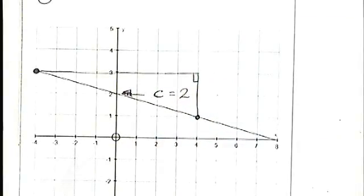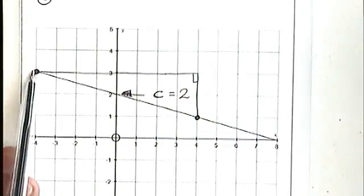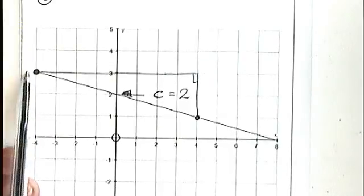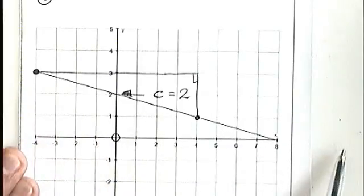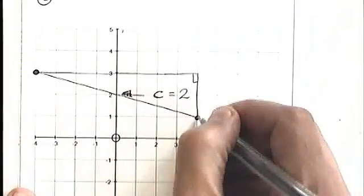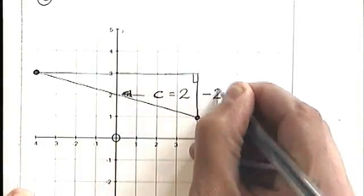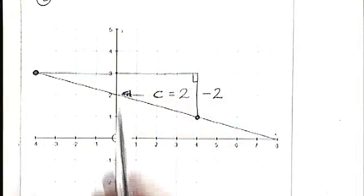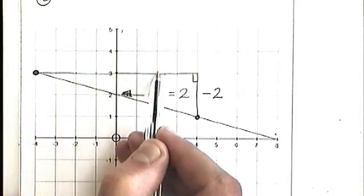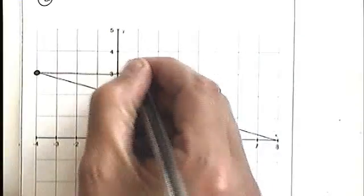Notice how this is going to be a negative gradient. Remember, if you're reading from left to right, you're reading this way, you're going downhill from left to right. So that is minus two units. How far along have we got? One, two, three, four, five, six, seven, eight units along.